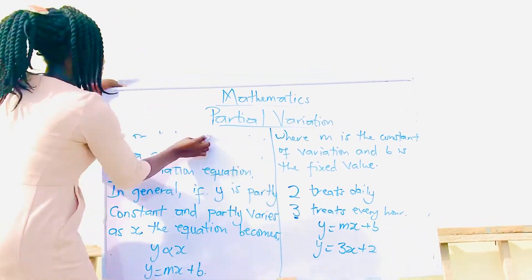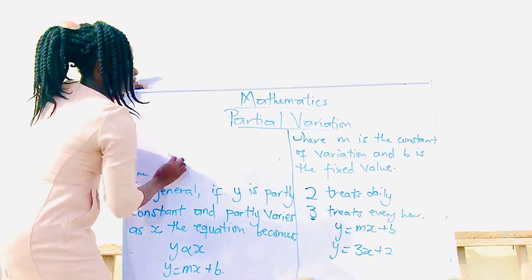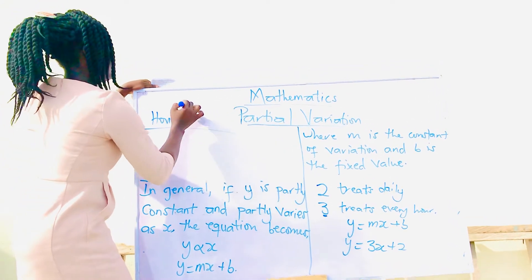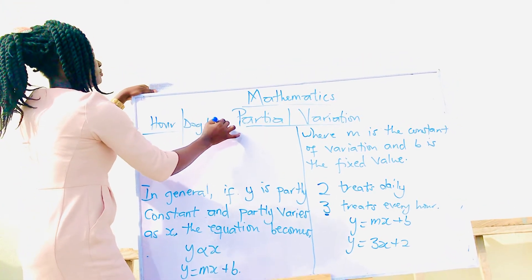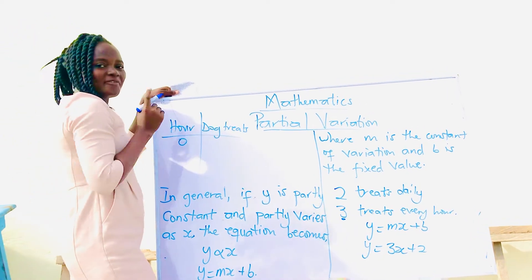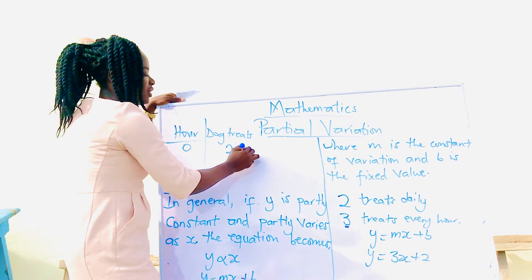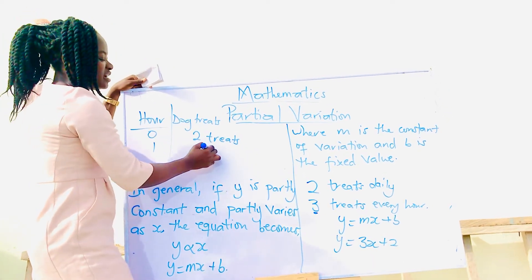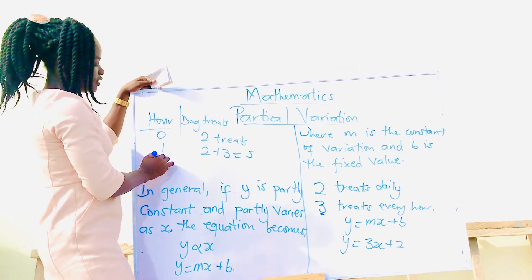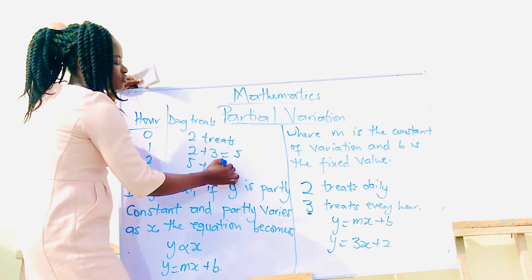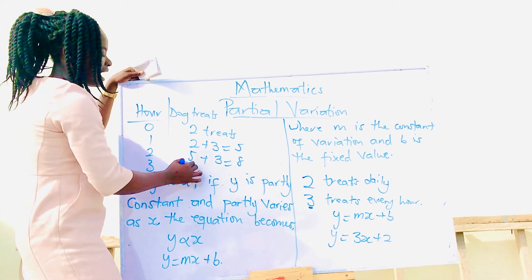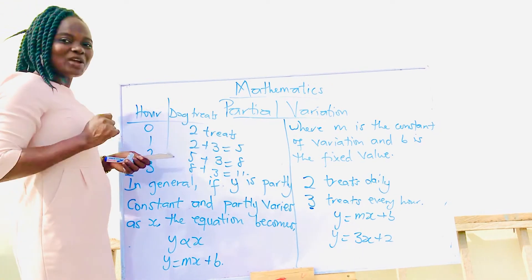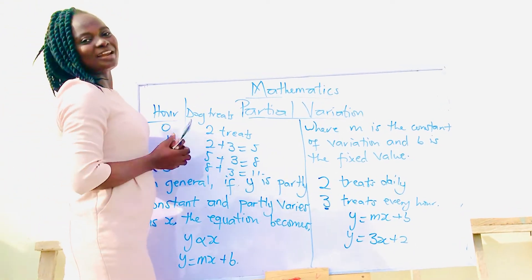In this form, we can have a table. Every hour, or zero hour, we have two treats down. That one is constant. He likes enjoying. Then per every hour, she adds three treats to it. Two hours, she's going to have an additional three treats. Three hours, an additional three treats is going to add up. You can do that for the 24 hours. Our equation is y equals 3x plus 2.